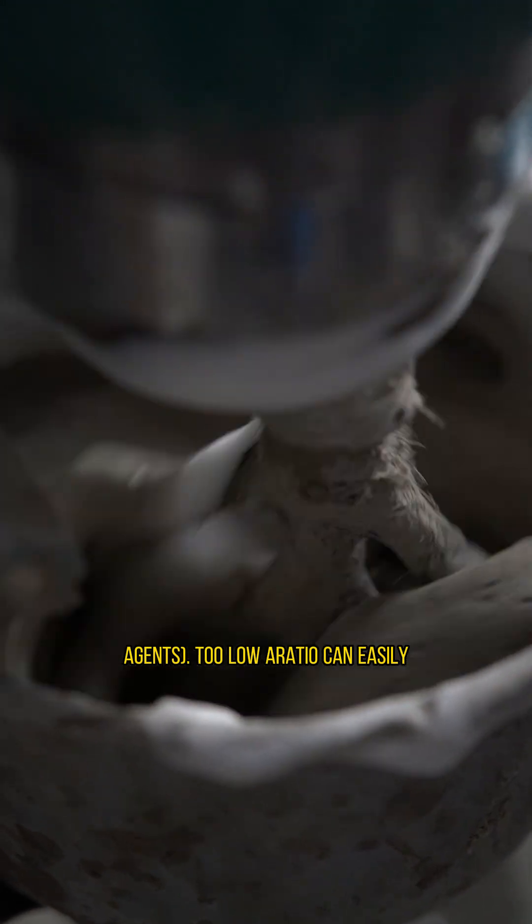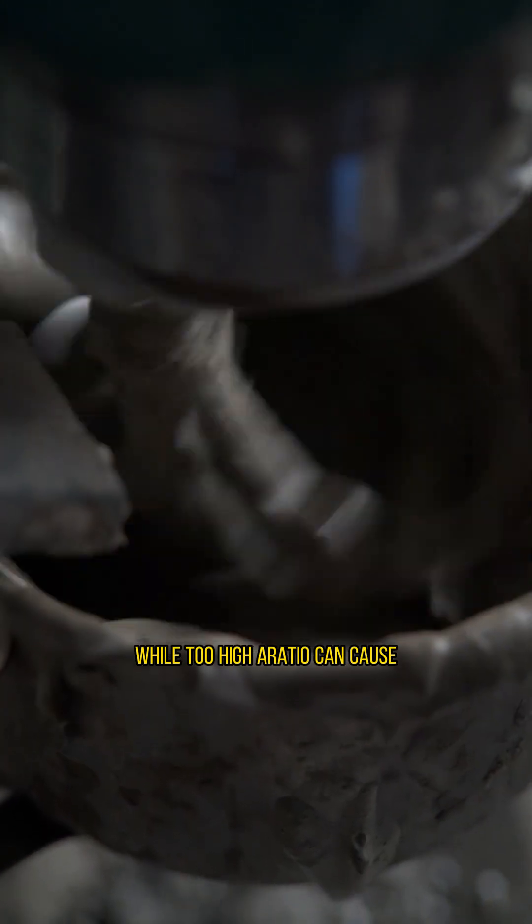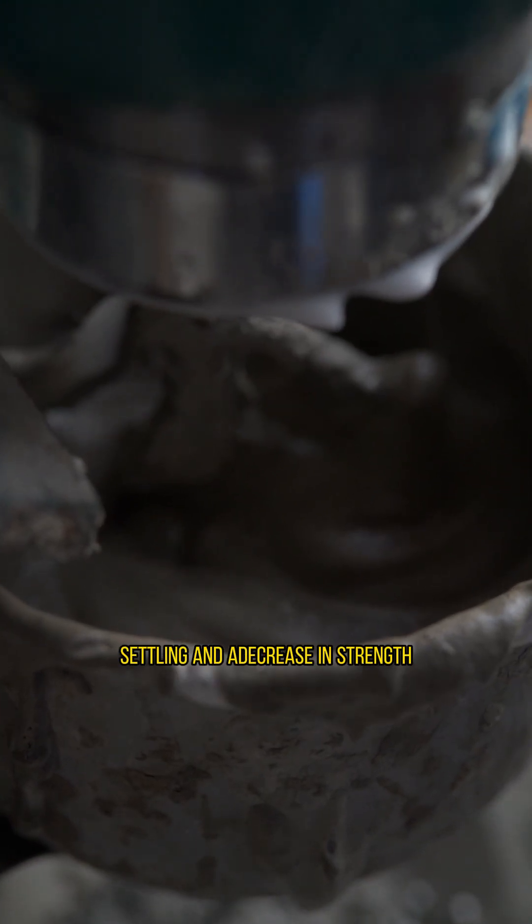Too low a ratio can easily cause the slurry to become too thick, while too high a ratio can cause settling and decreasing strength.